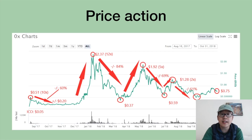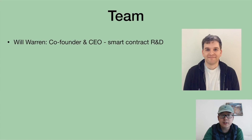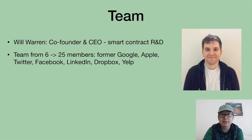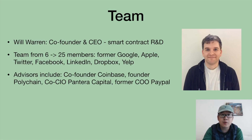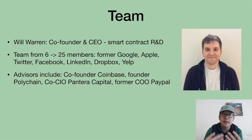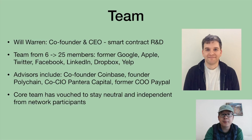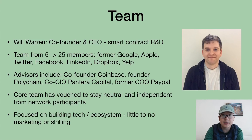There's a quick chart of the price action — you can see all the ups and downs, though the end is slightly off; it shows $0.75 but it's actually about $0.70 now. As for the team, Will Warren is co-founder and CEO with a lot of experience in smart contracts R&D. The team started at six and has grown to 25 full members with backgrounds from Google, Apple, Twitter, and more. They have well-known advisors from Coinbase, Polychain, Pantera, PayPal, and more. The core team has vouched to stay neutral and independent, focused on building the tech with little to no marketing or shilling.